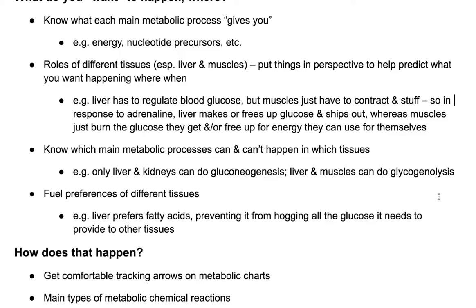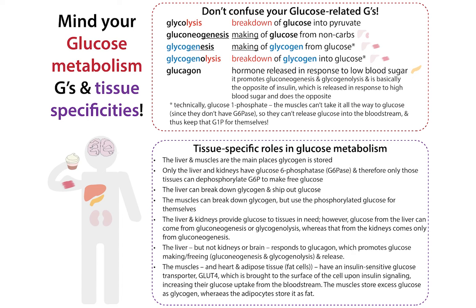Your liver is going to process things and decide: let's store this as fat, let's store this as glycogen, let's give some glucose to the tissues, let's give some fat to the tissues, let's give some proteins — now let's hold on to some of this stuff. And then when the tissues are running out of fuel, we'll send them some. So your liver has this key role of regulating the food throughout the body and regulating the blood sugar, giving out glucose when the blood sugar drops low and taking in glucose when it's high.